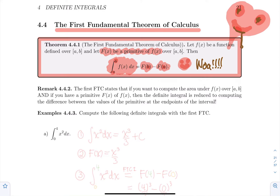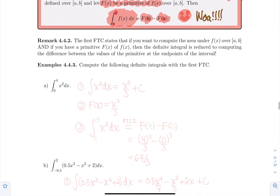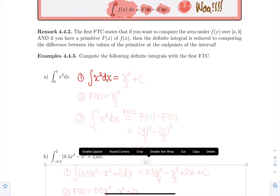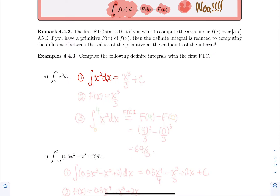First example: let's compute the integral from 0 to 4 of x² dx. So the first step — the way I like to do it — is first you forget about the bounds. You just see this as an indefinite integral question. We know that the family of antiderivatives of x² is x³/3 plus c. So that's the first step: forget about the bounds and compute the indefinite integral.